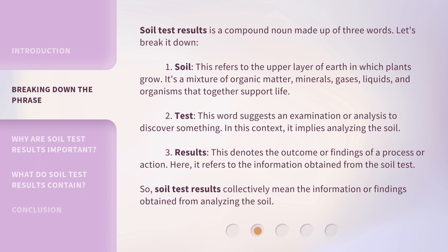Soil test results is a compound noun made up of three words. Let's break it down. 1. Soil — this refers to the upper layer of earth in which plants grow. It's a mixture of organic matter, minerals, gases, liquids, and organisms that together support life. 2. Test — this word suggests an examination or analysis to discover something; in this context, it implies analyzing the soil. 3. Results — this denotes the outcome or findings of a process or action; here, it refers to the information obtained from the soil test. So, soil test results collectively mean the information or findings obtained from analyzing the soil.